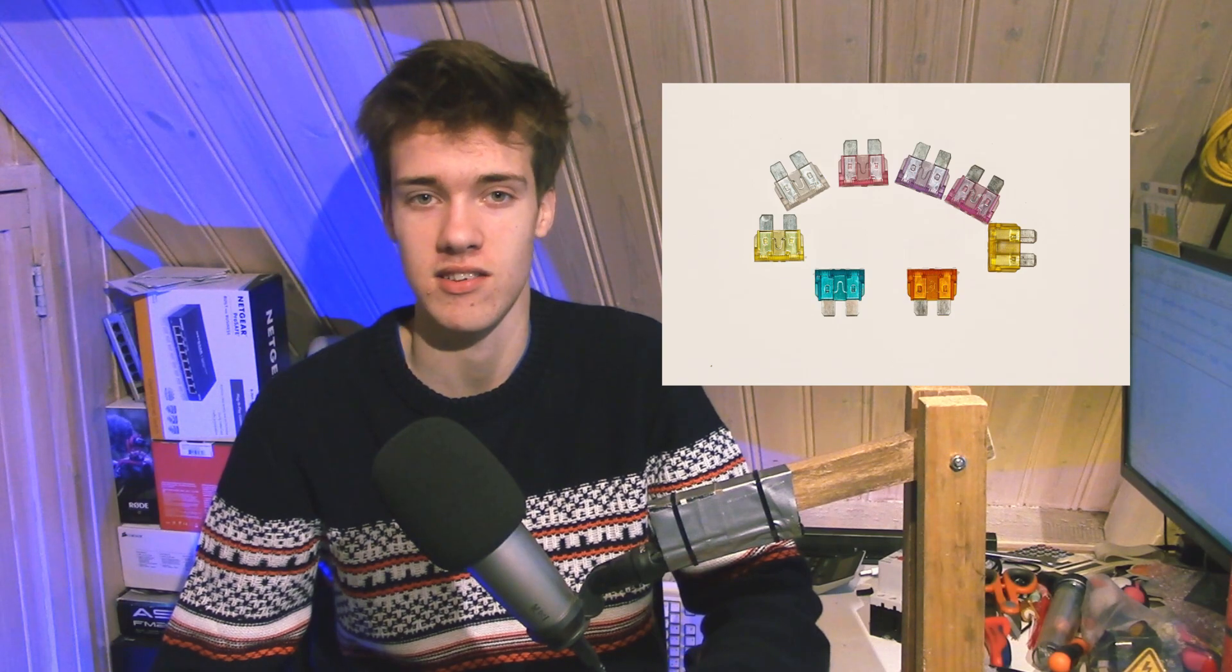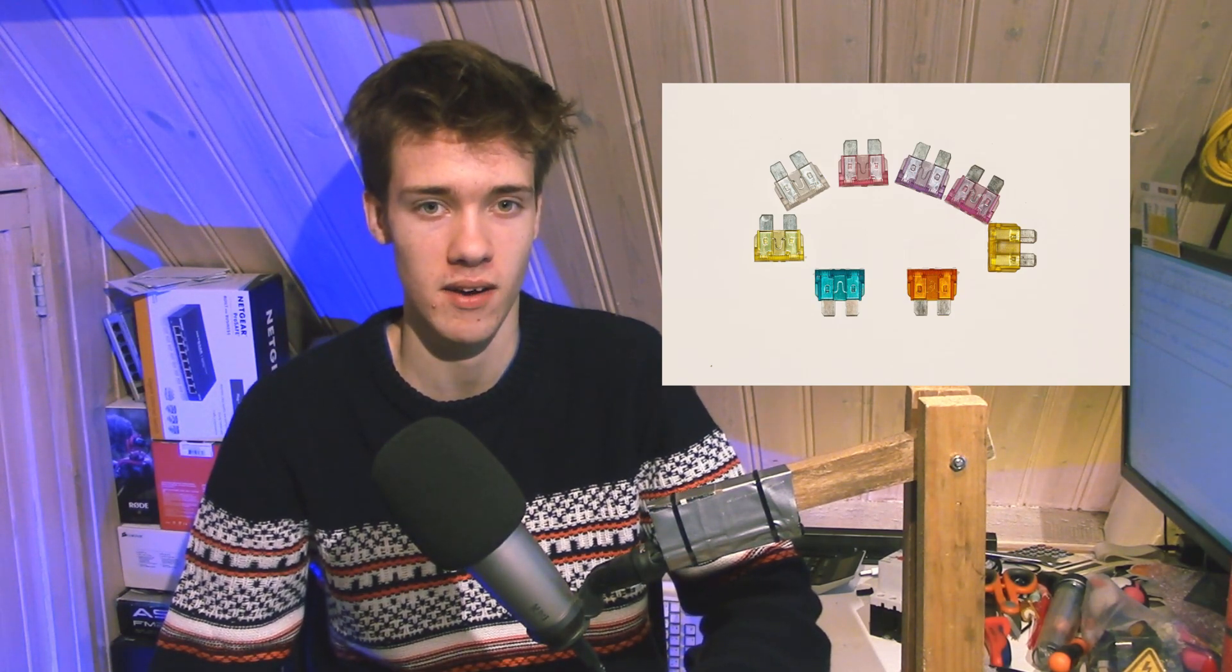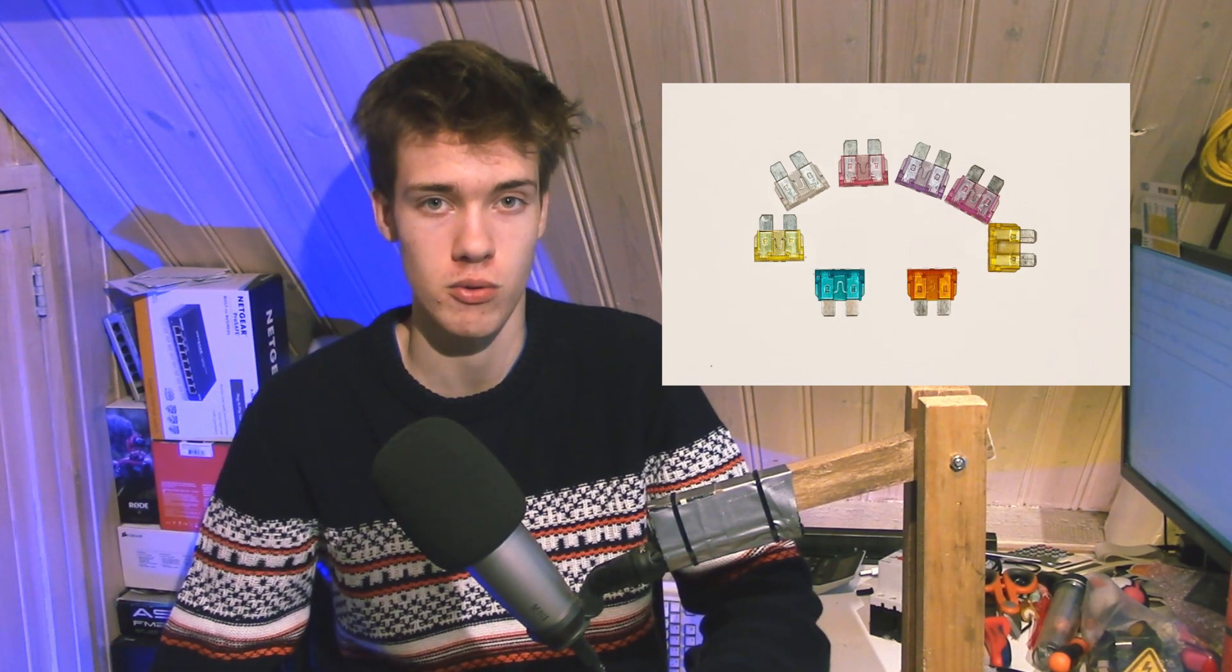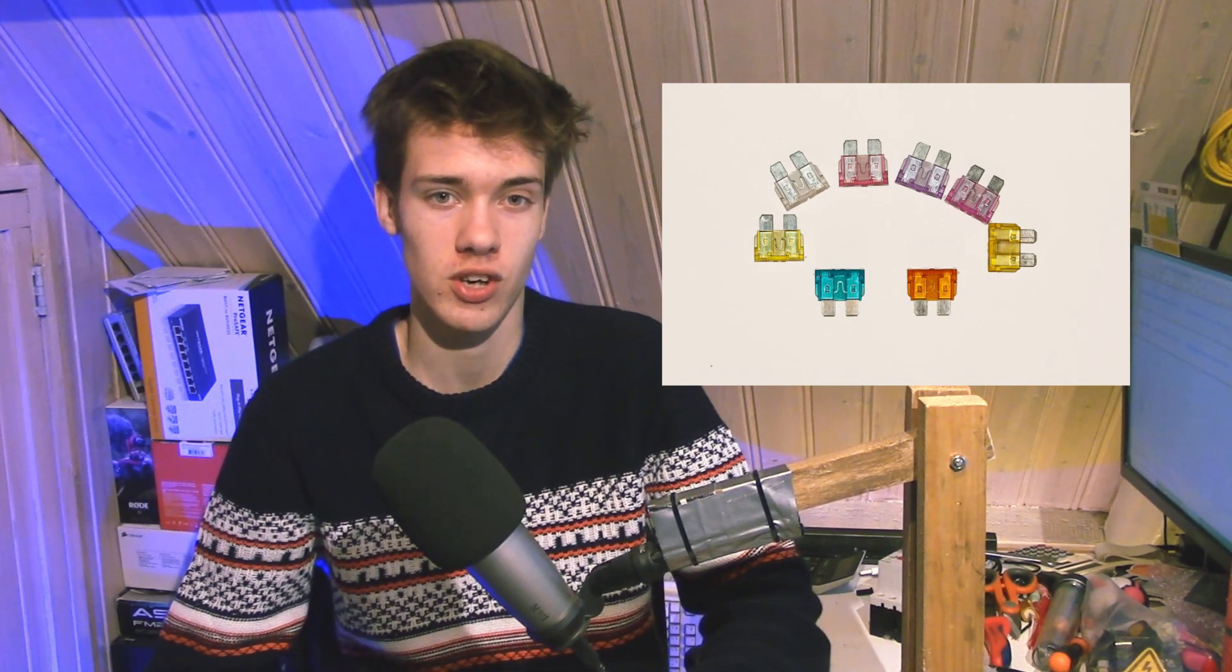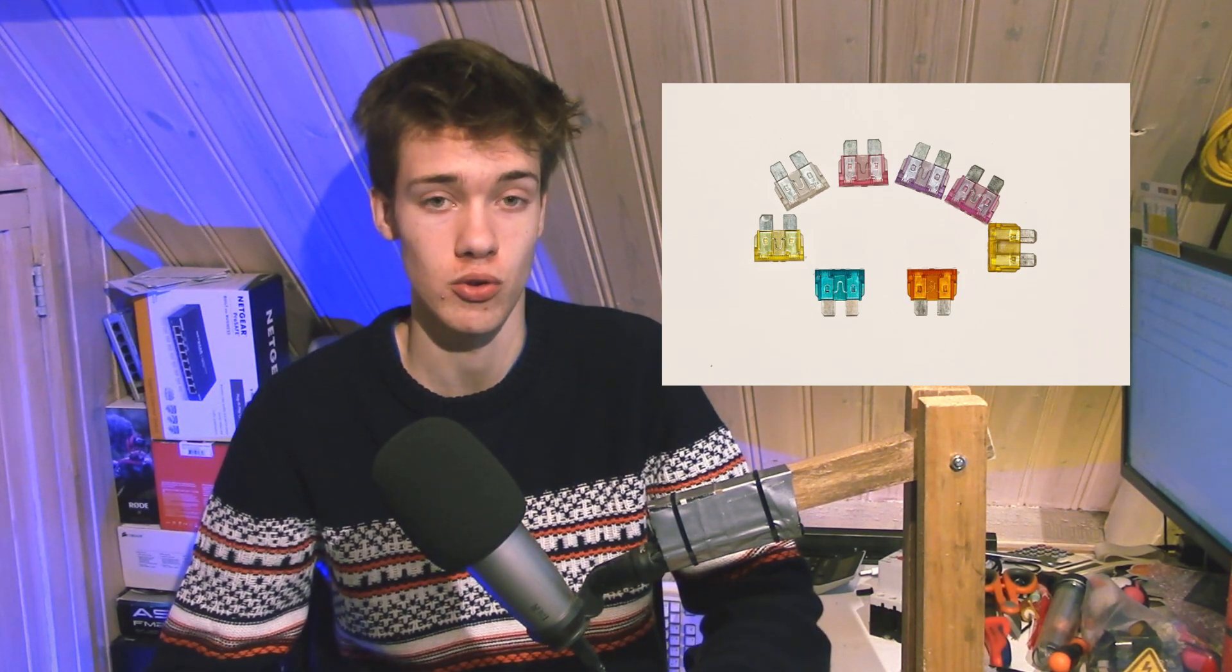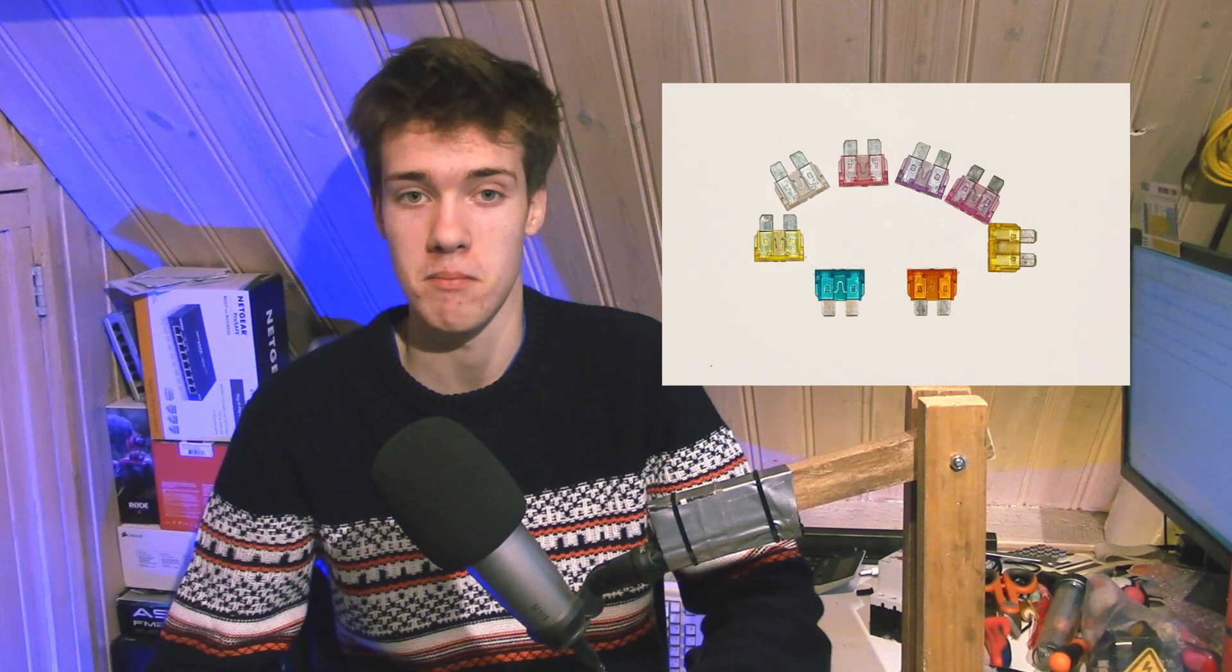Now the oldest and simplest type of overcurrent protection is the so-called fuse. A fuse is essentially a thing that contains a very thin piece of wire and the current flows through that wire. Once the current reaches a certain magnitude or beyond, that wire melts and therefore the fuse no longer conducts electricity and the system is switched off. The problem with this is that the fuse gets destroyed and has to be replaced.